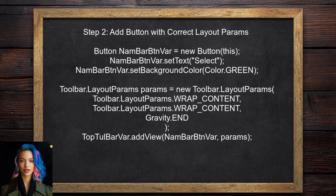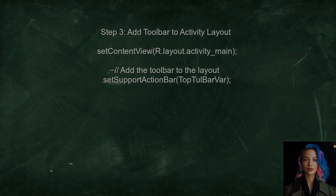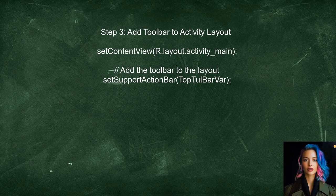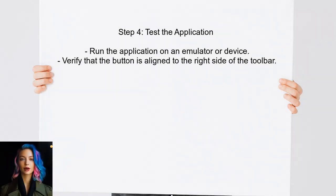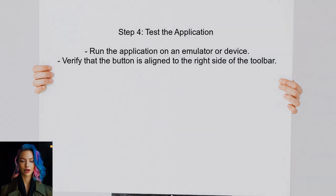Instead of LinearLayout, we will use a Toolbar LayoutParams. After adding the button with the correct layout parameters, the user should ensure that the toolbar is added to the activity's layout — this is crucial for the button to be displayed properly. Finally, the user should test the application to verify that the button is now aligned to the right side of the toolbar, by running the application on an emulator or a physical device.